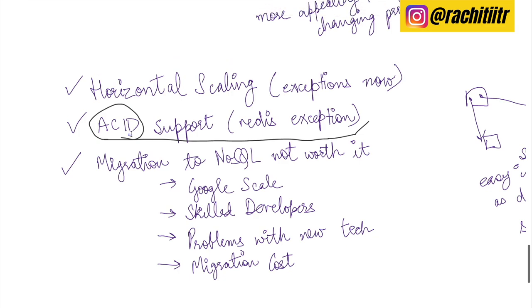Redis doesn't provide complete ACID support, but take durability — the 'D' in ACID — which means that written data persists across restarts. In-memory databases that haven't persisted to disk lose data on power failure. But Redis has an optional feature to persist in-memory data to disk, bringing durability into the picture. The world is changing — the mix of NoSQL and SQL is really what's happening.